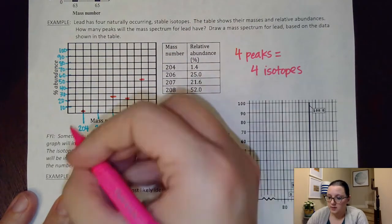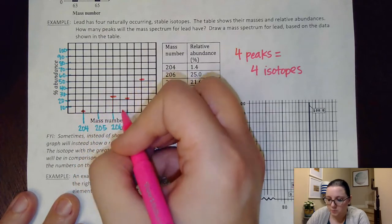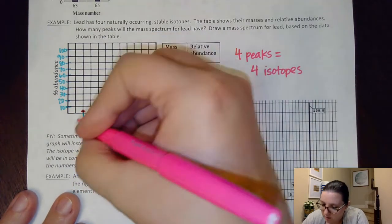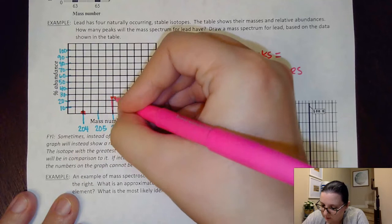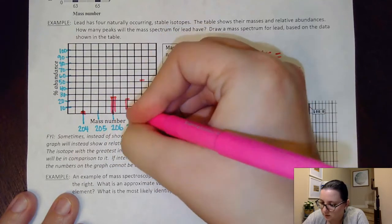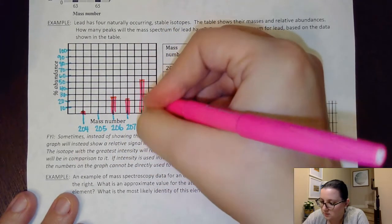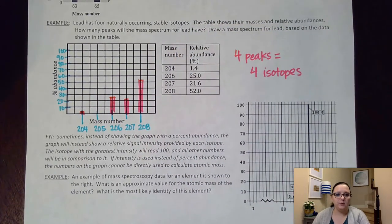So then, what I could do is I could either draw kind of a line with a peak thing like we saw, or I could just bar graph it and kind of color in here to create my mass spec. So there we go.